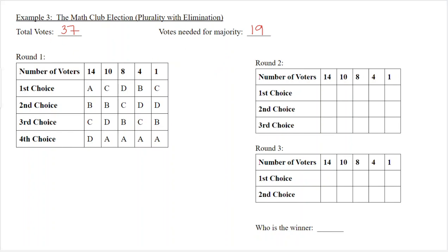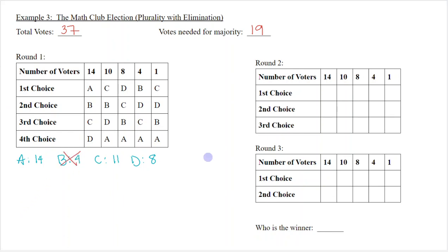In round one, we count first place votes for each candidate: Alicia has 14, Boris has 4, Carmen has 11, and Dave has 8. No one has 19 votes, so we eliminate the person with the fewest first place votes, which is Boris.